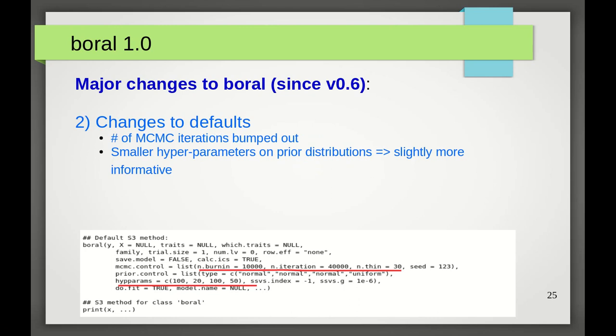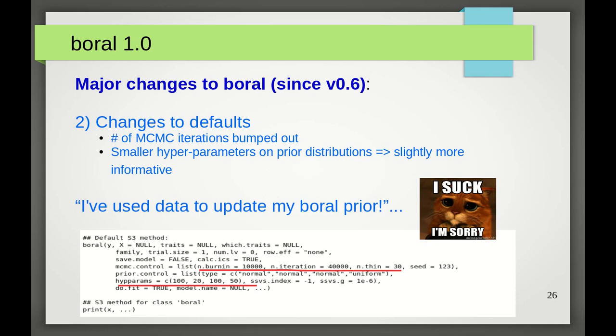Number two. Changes to defaults. Related to point one is the fact that some of the default settings in the main boral function have been altered. The default number of MCMC iterations has been bumped up slightly, and the hyperparameters are now smaller than those used in version 0.6, such that the default priors now use are slightly more informative than what they used to be. I can't really give a theoretical justification as to why I made these changes. It's just based on personal experience with using boral, as well as feedback from experts who've used boral, as well as fitted similar models over the past two years. So I guess you could say that I've used data to update my boral prior.